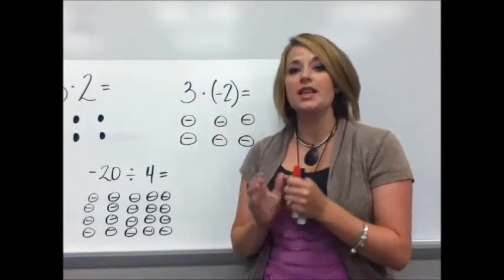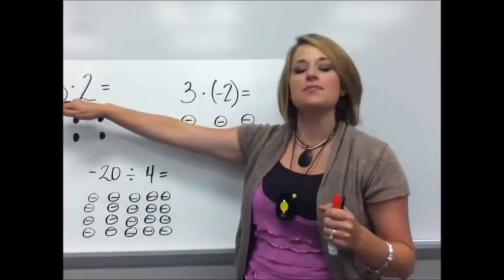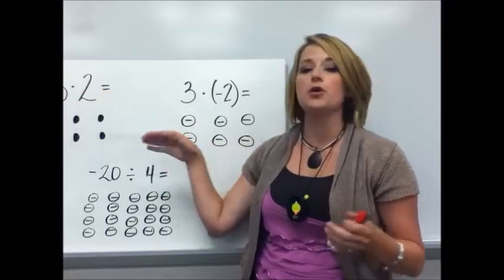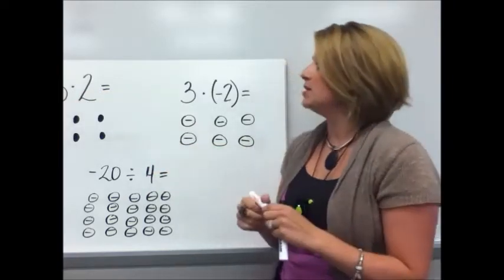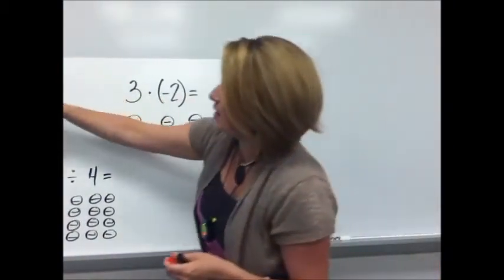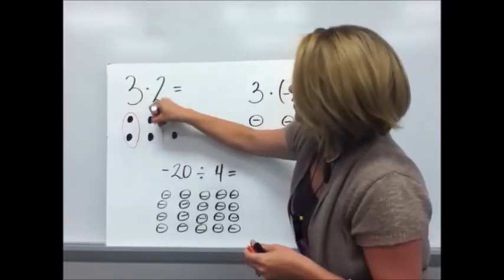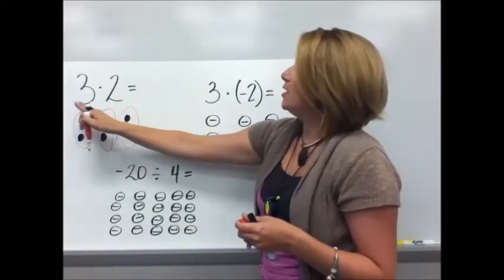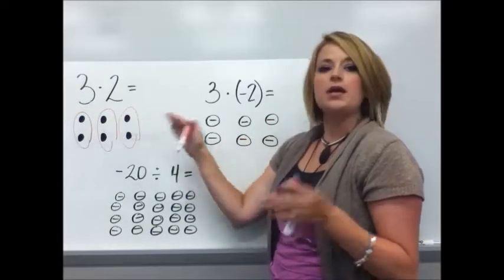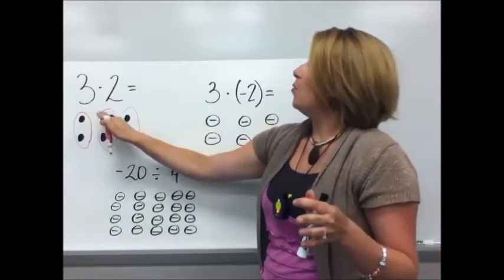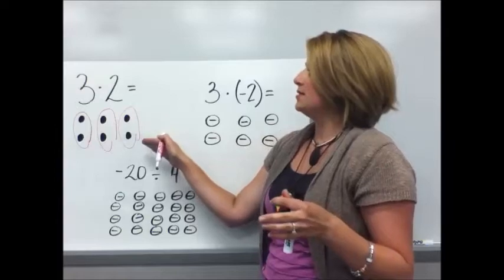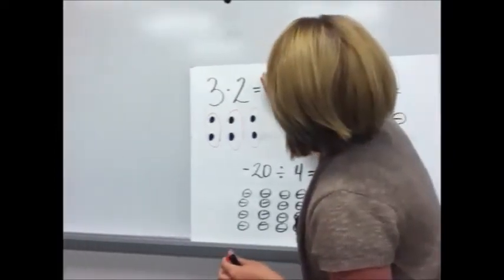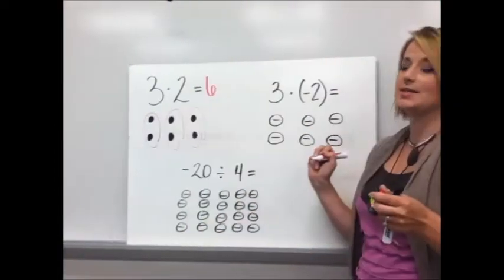Let's think back to how you originally learned multiplication. When you were given something like three times two, you probably had it explained to you that it's like having three groups of two or it's two rows of three. Either way you learn to count one, two, three, four, five, six. Three times two is six.